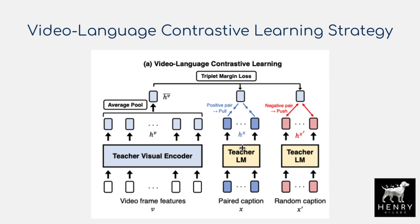They also have a language modeling objective. This is a late fusion multimodal architecture — it separately processes the visual video data and separately processes the language data, then merges representations at the loss function layer. The language model takes the paired caption with the video and a random caption for this triplet margin loss. Next is the hinge loss, used to structure the loss function between the pooled video representation, the paired caption representation, and a randomly sampled caption.